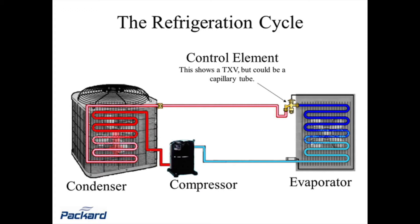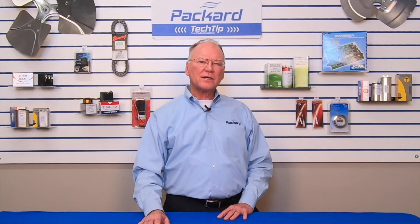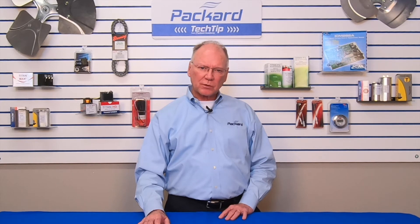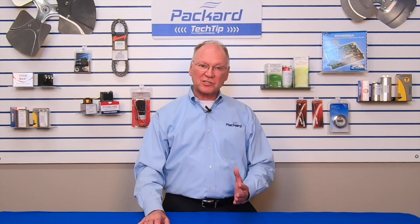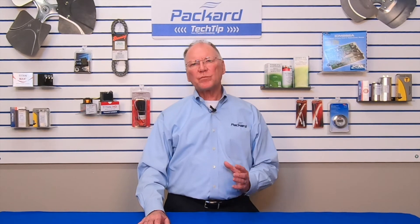Looking at those lines, we have a red line and a blue line. The red line indicates heat; the blue line indicates cool. In this diagram, if we focus on the compressor, we'll see that red comes out of the compressor. The red is on the discharge side of the compressor, so anything coming out of the compressor is discharged through the red line.